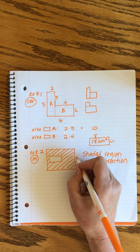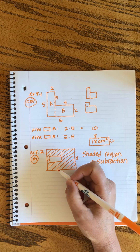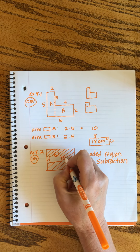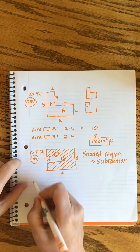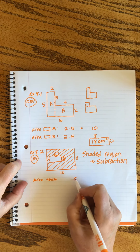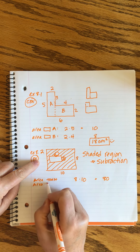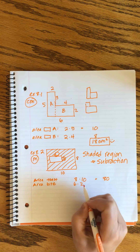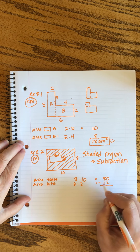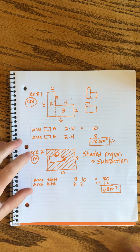We have dimensions of 8 and 10 for the outer rectangle, and 6 and 2 for the inner rectangle. The area of the toast is 8 times 10 equals 80. The area of the bite is 6 times 2 equals 12. Subtract and we get 68 meters squared. Shaded regions always lead to subtraction.